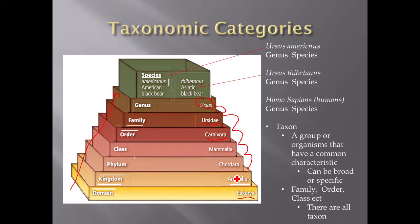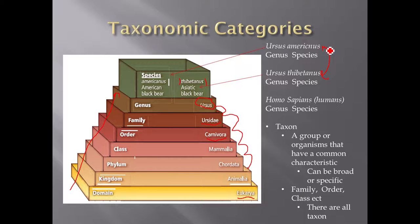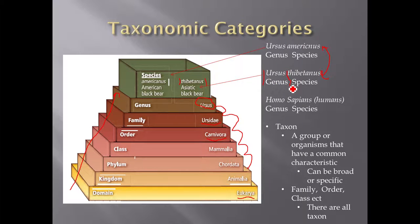Now I want to toss in some more examples. As you can see, there's the Asiatic black bear and the American black bear, and they actually have different names. The Asiatic black bear is called Ursus thibetanus and this one is called Ursus americanus. They look very similar but they do have some differences, and because they come from different parts of the world we have different names for them. For humans — humans are called Homo sapiens. Our genus would be Homo and our species would be sapiens. The first part refers to the genus, and the second part refers to the species name.